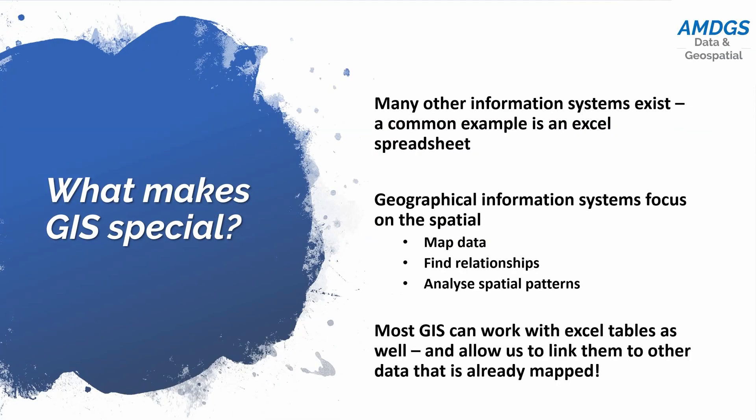So what makes GIS special? Information systems are something we use all the time, and probably the most common example is Excel spreadsheets. Excel spreadsheets are an information system — they allow us to input data into cells in various types, whether that's text, numeric, or even images. They allow us to sort that data, analyze it, and visualize it to produce graphs and tables so we can more effectively understand that data. And GIS in many ways is the same — the tables we work with in Excel could be our starting point for working in geographical information systems.